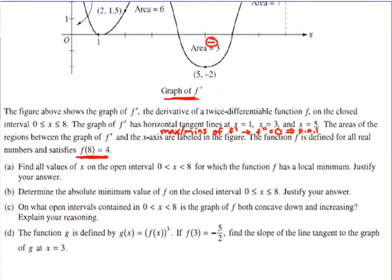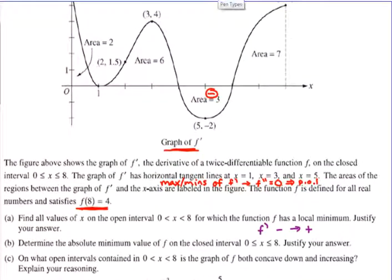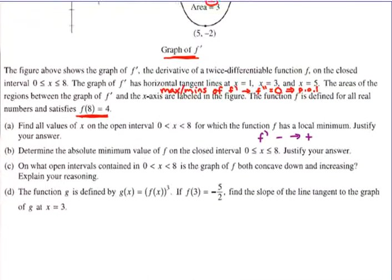Okay, find all values of x on the open interval for which the function f has a local minimum. Justify your answer. So this should be pretty easy. We're thinking f has a local minimum where f prime changes from negative to positive. So where does f prime change from negative to positive? The only place where that happens is right here, and that is at 6.